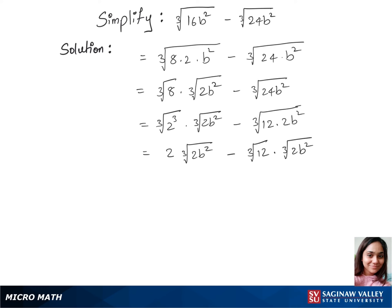These both terms, we have the one common thing, that's cubic root of 2b squared. We'll take this out. So that's cubic root of 2b squared and inside the bracket, we have 2 minus cubic root of 12.